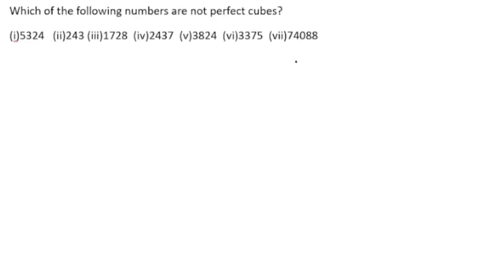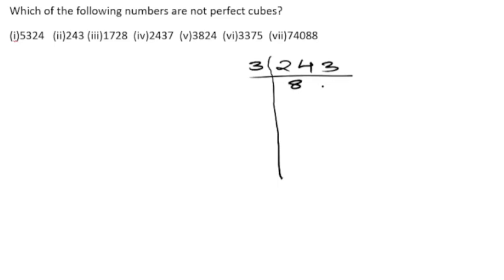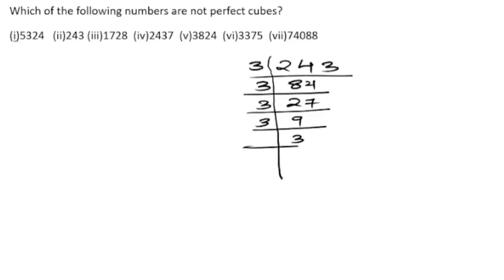Now let us check 243. It is divisible by 3. Dividing repeatedly by 3, we get: 3 eights are 24, 3 ones are 3, and continuing — we find five 3s in total.